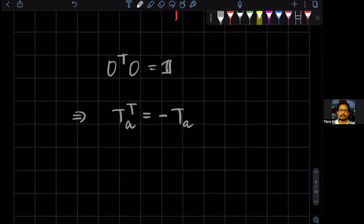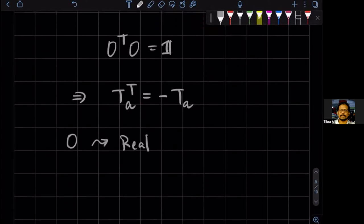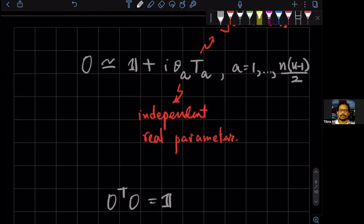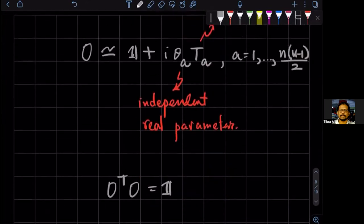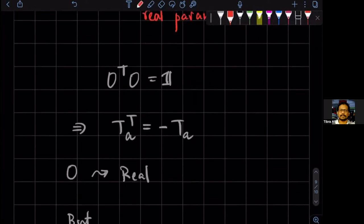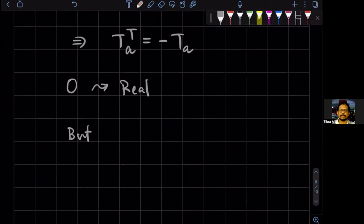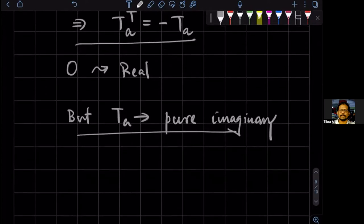But you know, the matrices O, they are real. But the way we have parametrized this, because of this factor of I, these are pure imaginary.